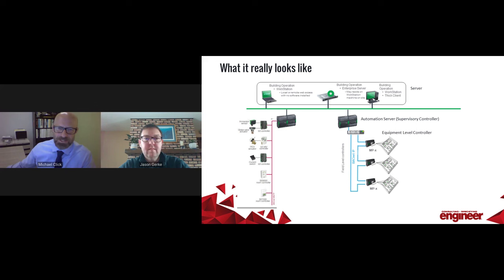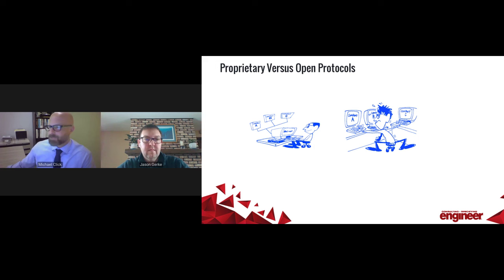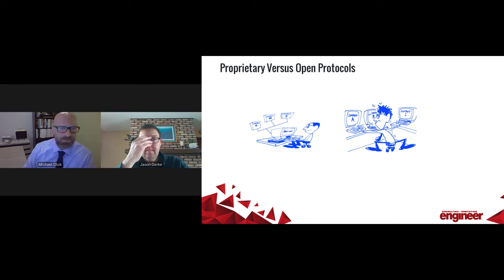This is kind of what it really looks like out in the field. You have your operator workstation at the top — that can be a laptop, server rack, or desktop. Then your next layer below is your automation servers, tying into your equipment-level controllers, and then out to your I/O — your valves, actuators, and those things in the field. As we were putting together this presentation, there was quite a discussion about proprietary versus open protocol, which continues to perpetuate our industry.